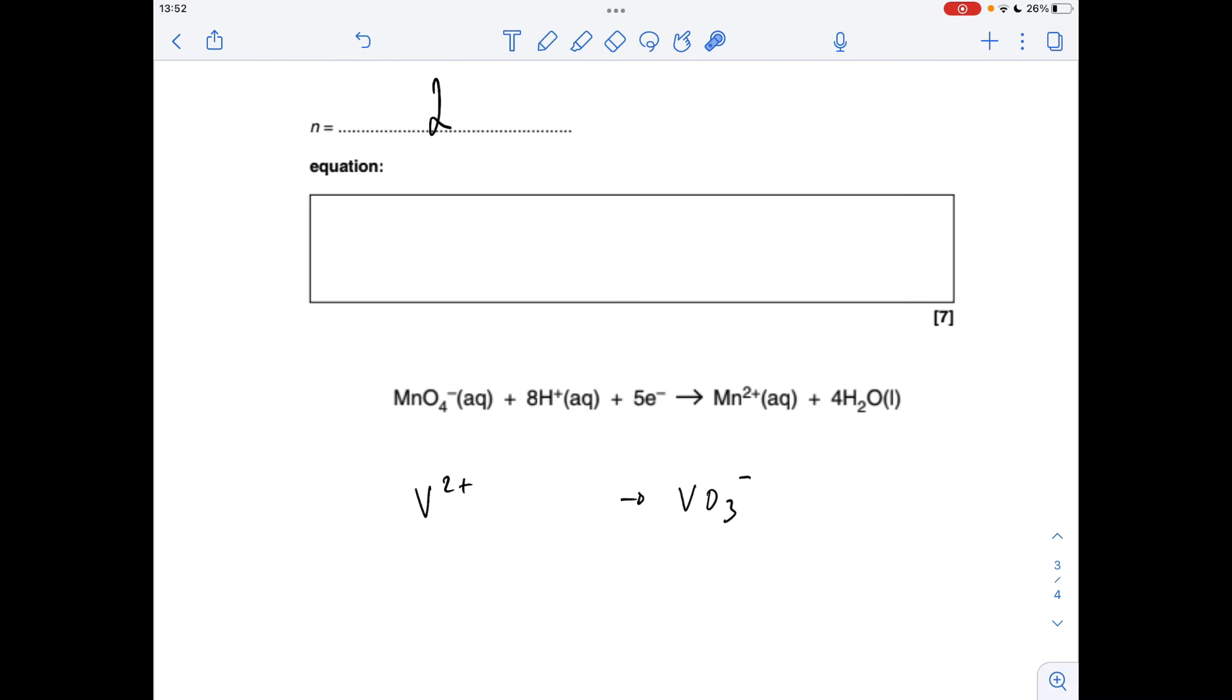Now we already know there's three electrons involved in this half equation, but I'm just going to balance it the way I normally do. We've got three oxygens on the right, none on the left, so we'll put three H2O's on the left, and that gives us three O's each side. That's introduced six hydrogens, so six H+'s. In terms of charge, we've got 2+ on the left and at the moment we've got 5+ on the right, so if we put those three electrons in, that's going to bring the charge on the right down to 2+ to match that.